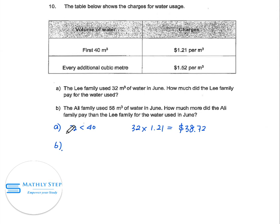Part B: The Ali family used 58 cubic meters of water in June. How much more did the Ali family pay than the Lee family for the water used in June?